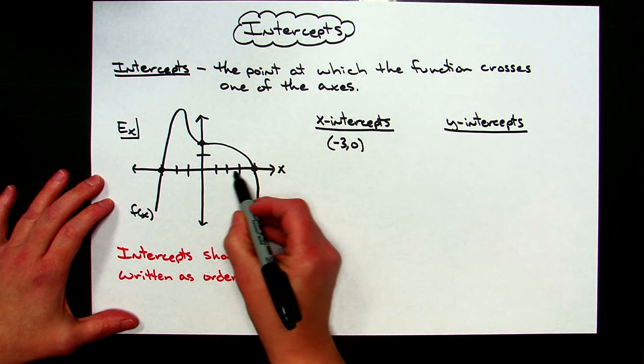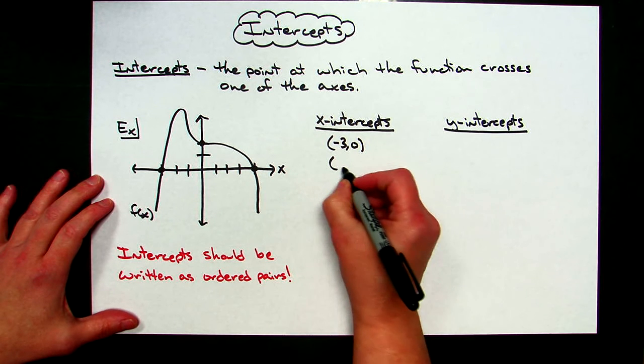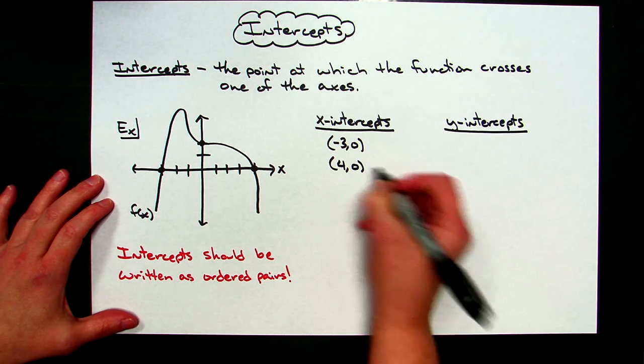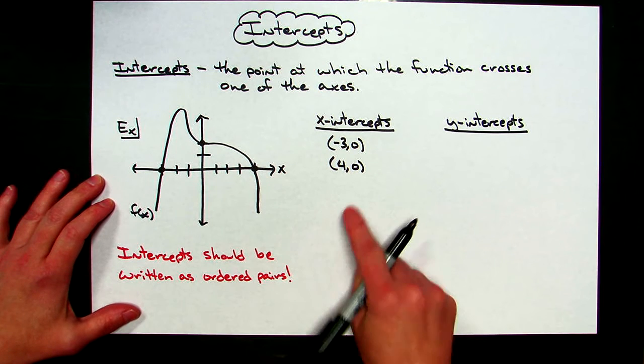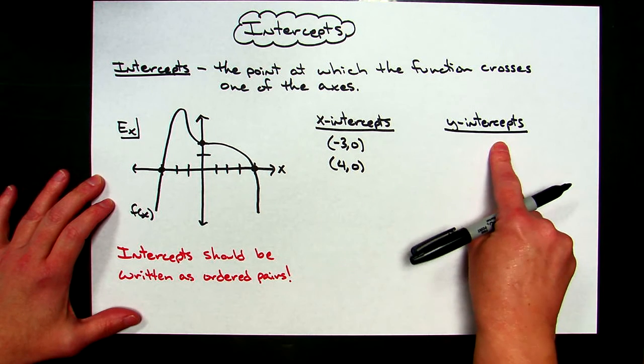Then I would need to come over here, goes through 4, so then I have an x-intercept of 4, 0. So it only crosses the x-axis at 2 places, so I have 2 x-intercepts.